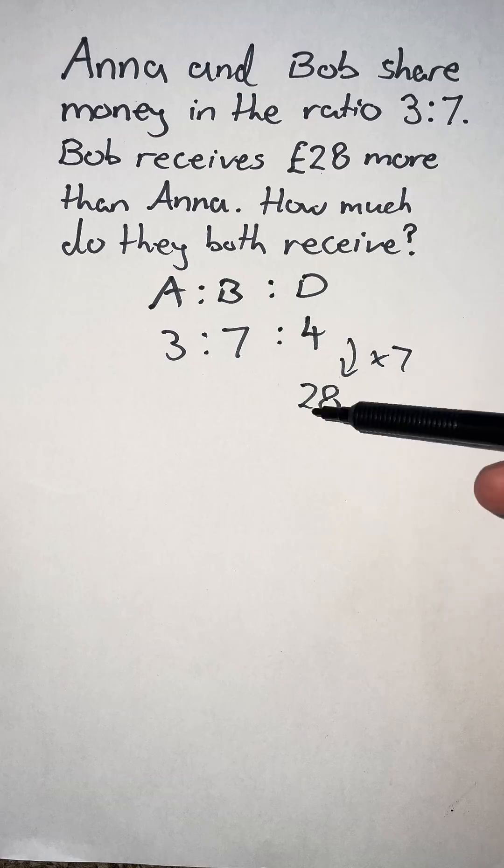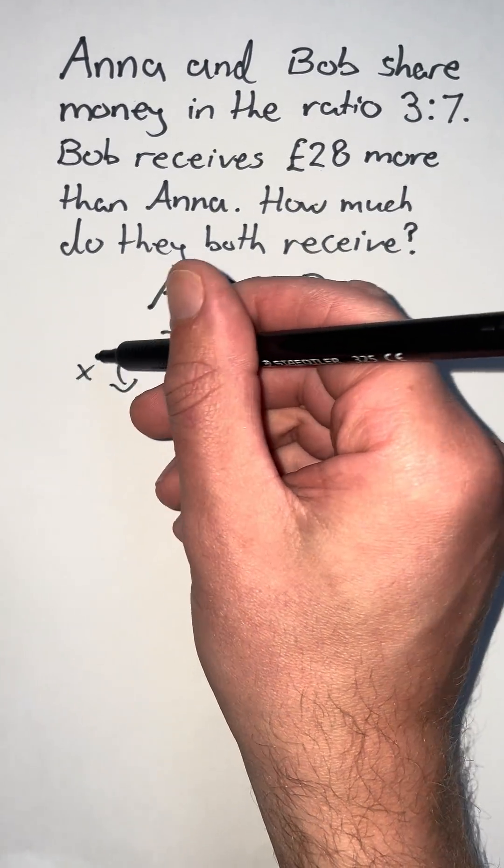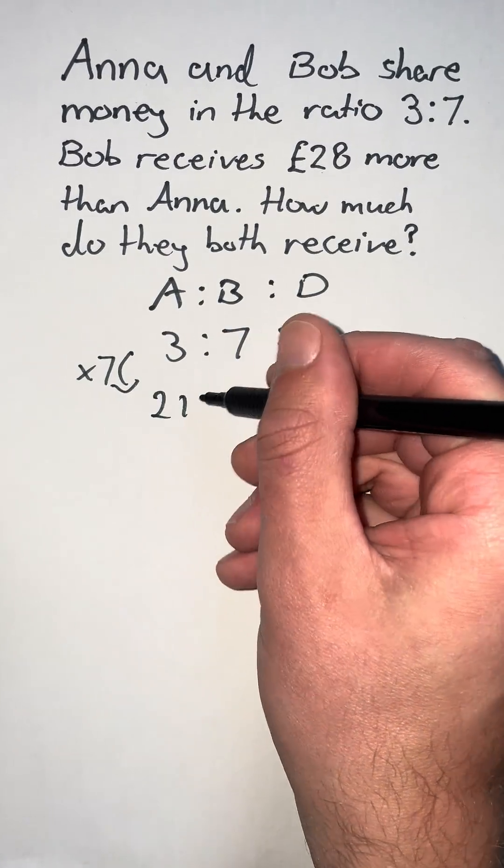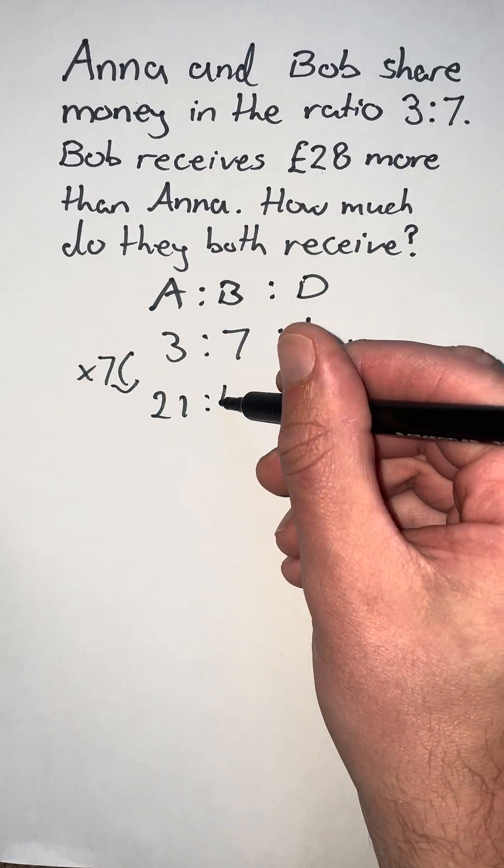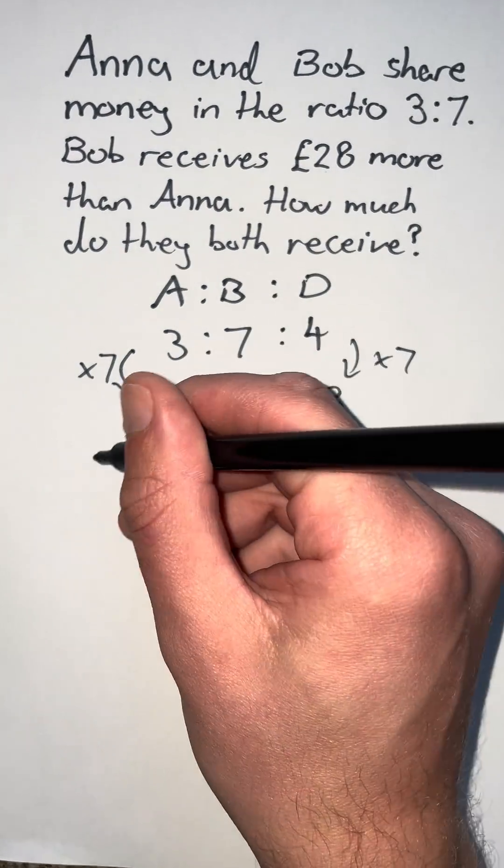Since I'm creating an equivalent ratio, I need to multiply everything else in this ratio by 7. 3 times 7 is 21. 7 times 7 is 49.